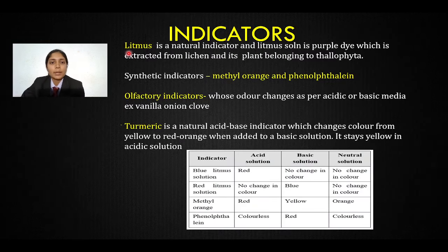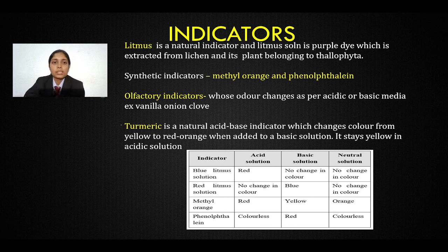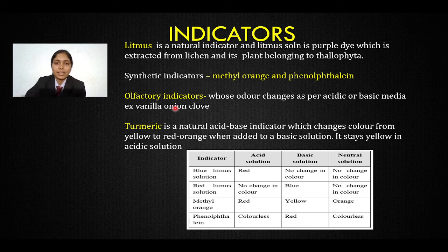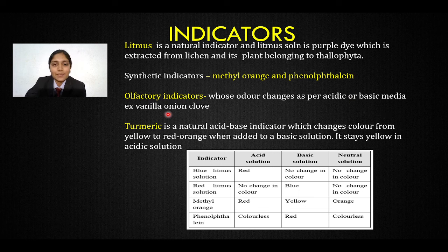Now, indicators. What are indicators? Litmus is a natural indicator. It is a purple dye extracted from lichen, which is a plant belonging to Thallophyta. Synthetic indicators are man-made indicators like methyl orange and phenolphthalein. Olfactory indicators tell us if a substance is acid or base by changing their odor. Examples are vanilla, onion, and clove.